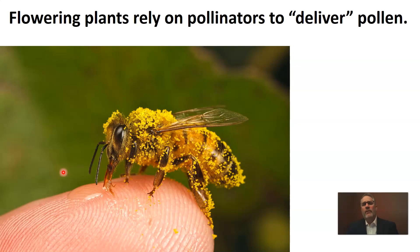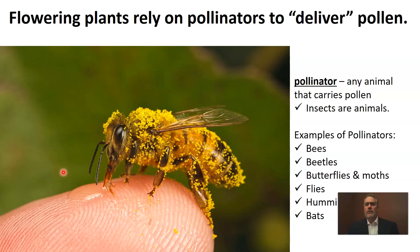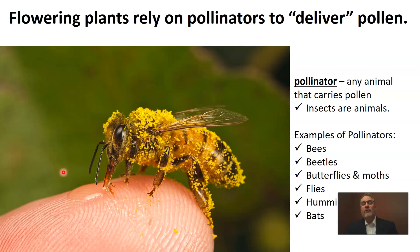Flowering plants — angiosperms — rely on pollinators to deliver pollen. So we need to know what a pollinator is. A pollinator is really any animal that carries pollen. The first thing to point out is that insects are animals — they are not plants and they're not microscopic life. Insects are probably the biggest group of pollinators.